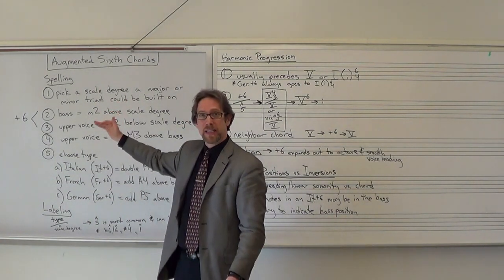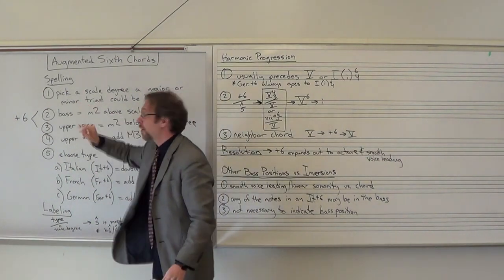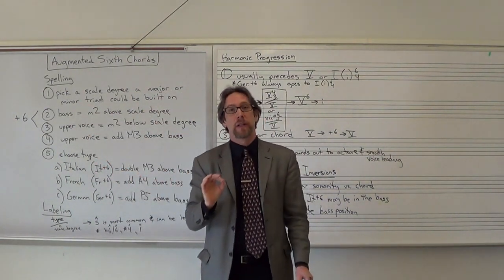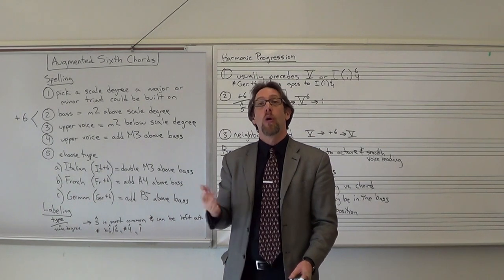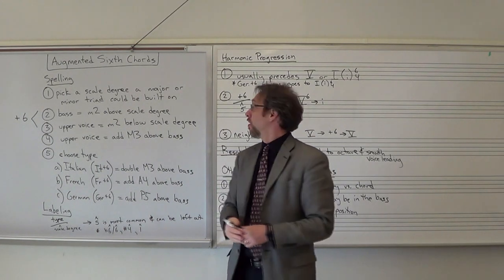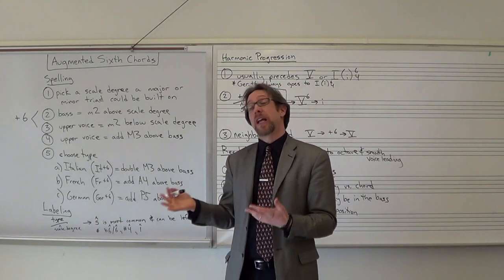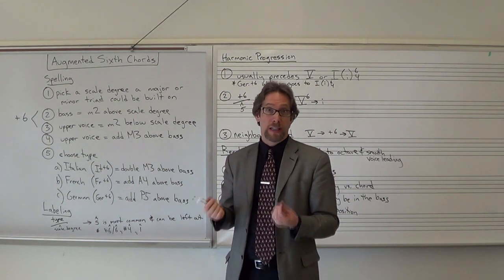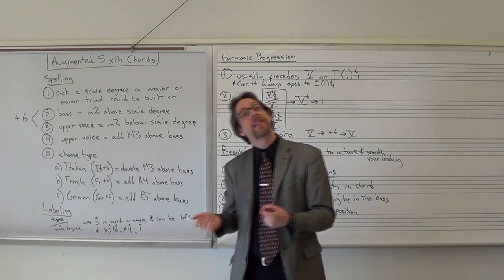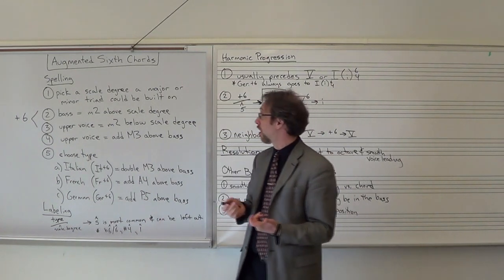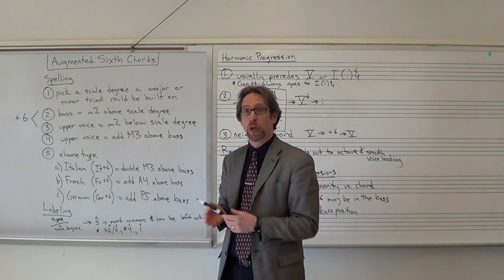I have a nice step-by-step method that should work very well. Step one is to pick a scale degree where you could build a major or minor triad. That's going to be most of our scale degrees, except scale degree 7 — the leading tone, which creates a diminished triad — or when you're in a minor key, scale degree 2, which is also a diminished triad. Any other scale degree should work just fine.